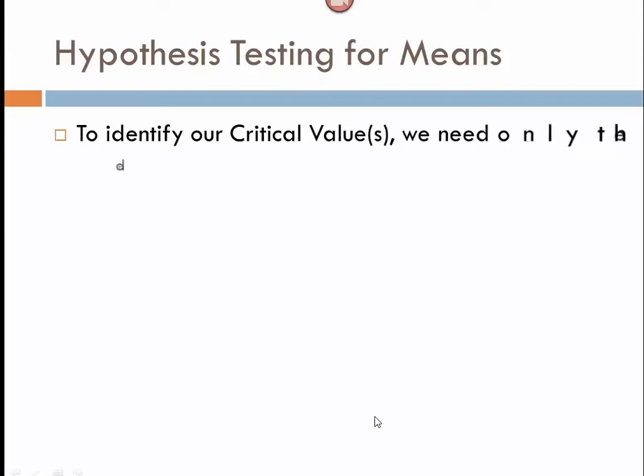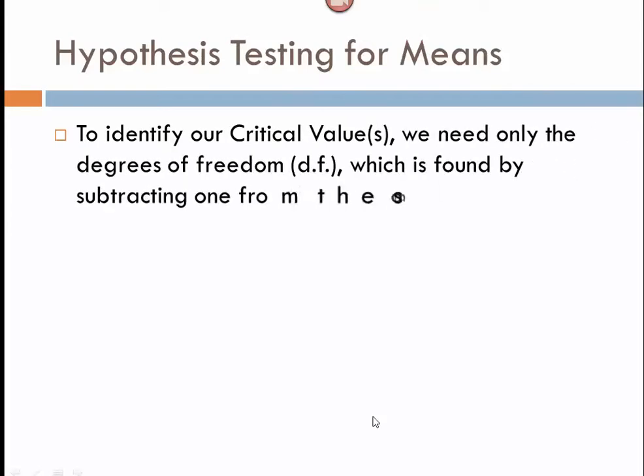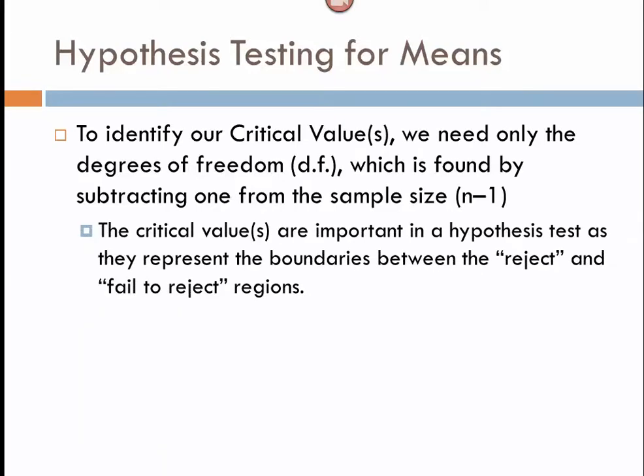Now, to identify our critical value, this is where we would need to either use your technology or we would use the table that you've been provided. And we need to determine this using the degrees of freedom since we're going to be using the T chart by subtracting one from our sample size. The critical values are very important when you're using a critical value approach in that they represent the boundaries between the rejection and the failing to reject regions.